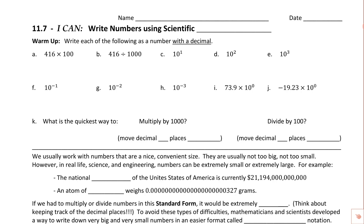In this next section, we're going to put the rules we've learned for working with exponents to really good use. This is an awesome tool we're going to talk about — it's section 11.7. I can write numbers using something called scientific notation. You're going to see this in your science classes and you'll definitely see it on the test in this class.